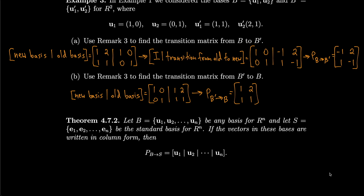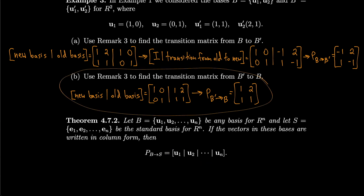Let B equal U1 through Un be any basis for Rn, and let S equal E1 through En be the standard basis for Rn. If the vectors in these bases are written in column form, then the transition matrix from B to S is simply the matrix formed by the basis vectors. This follows clearly from the previous remark, and the last example makes it more convincing, though it is not a formal proof.